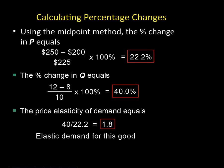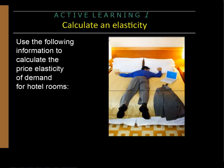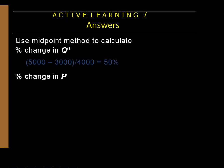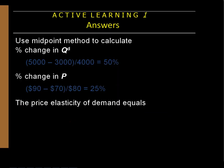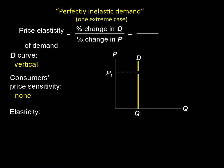Whether you're going from 250 to 200 or 200 to 250, you always have the same denominator. So when we calculate this — price in the denominator, quantity in the numerator — it's 40% over 22.2%, giving us 1.8. In the notes, I want you to calculate the elasticity of demand for hotel rooms using the midpoint method. You'll need to know how to do that for the test, and also for your business.